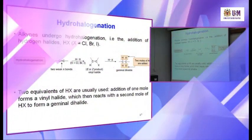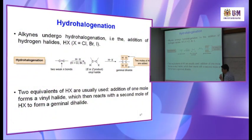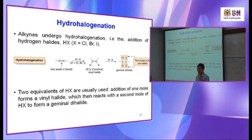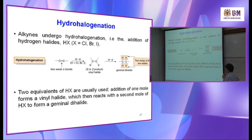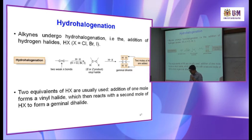Hydrohalogenation follows Markovnikov's rules — meaning H is added to the carbon with more H atoms. With two equivalents of HX, both H atoms bond to the same carbon. For a terminal alkyne, both H atoms bond to the terminal carbon. This is hydrohalogenation of alkyne following Markovnikov's rules, and the end result is the geminal dihalide.